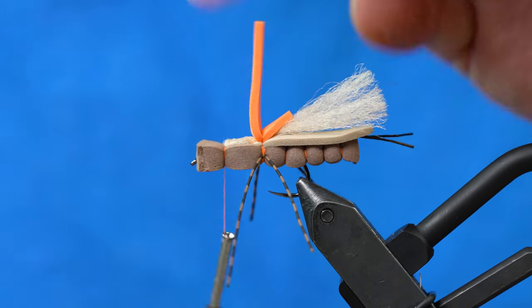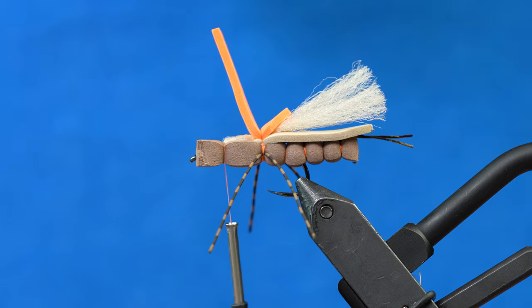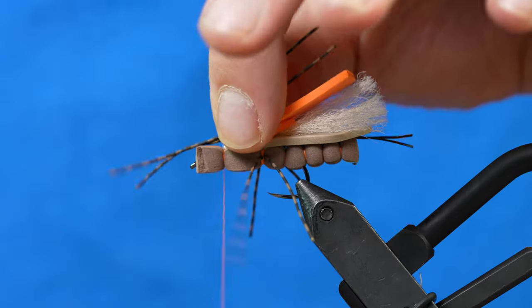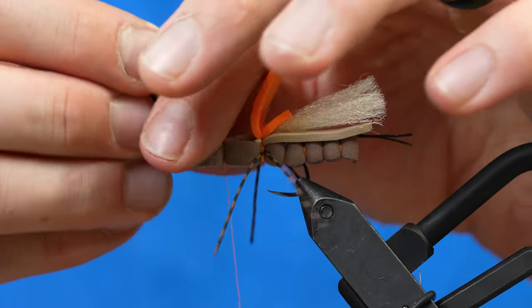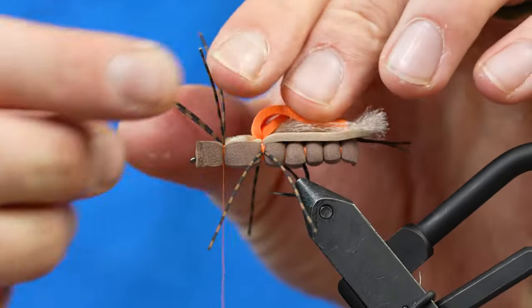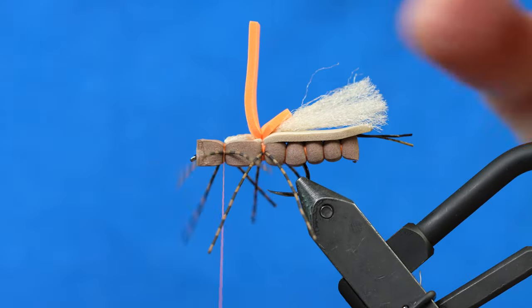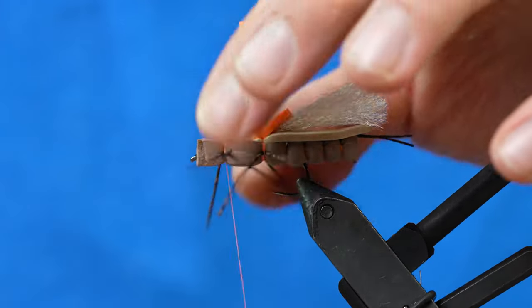Now we're going to do the same thing with these centipede legs and tie two of them in. Do two soft wraps. We'll trim those guys, all four at the same time. We'll finesse those to each side, do two more wraps to secure those in.